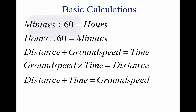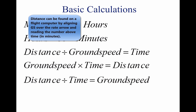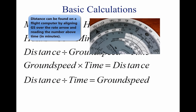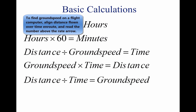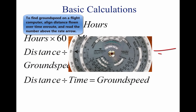Answer: 1 hour 30 minutes. To find the distance flown in a given time, multiply ground speed by time. The distance flown in 1 hour 45 minutes at a ground speed of 120 knots is 120 times 1.75, or 210 nautical miles. To find the ground speed, divide the distance flown by the time required. If an aircraft flies 270 nautical miles in 3 hours, the GS is 270 divided by 3 equals 90 knots.